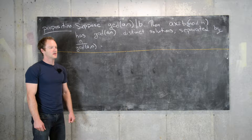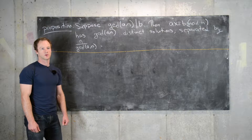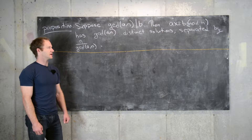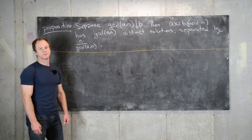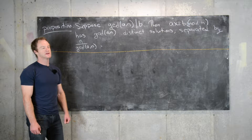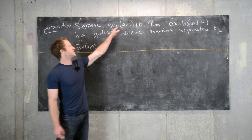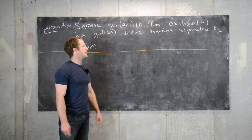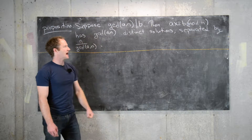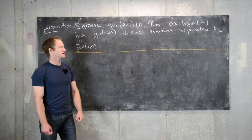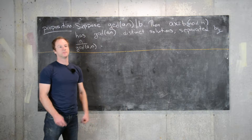In this video we're going to look at the following result regarding linear congruences. In a previous video we proved that if the GCD of a and n divides b, then ax ≡ b mod n has a solution.